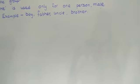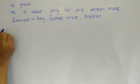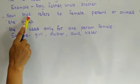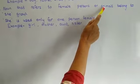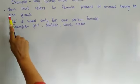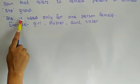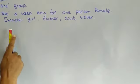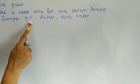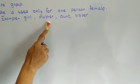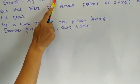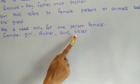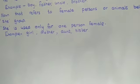Now let's see the other one. Nouns that refer to female persons or animals belong to the she group. She is used only for one person — female. For example: girl, mother. Male was he group: uncle. She group is aunt. Brother is he group. Sister is she group.